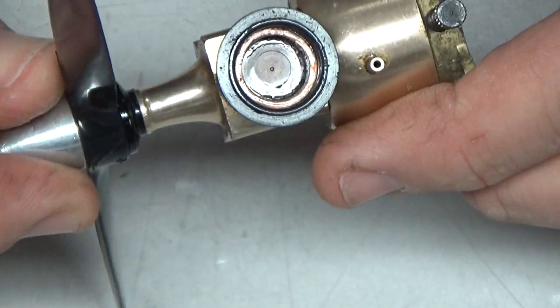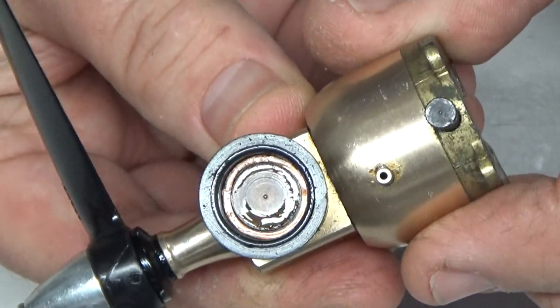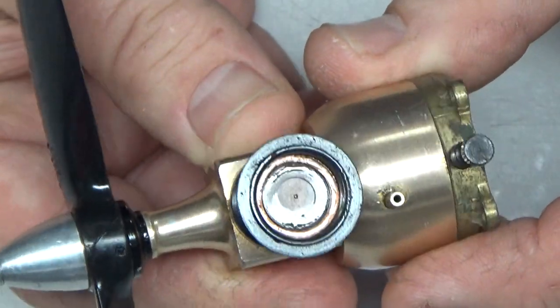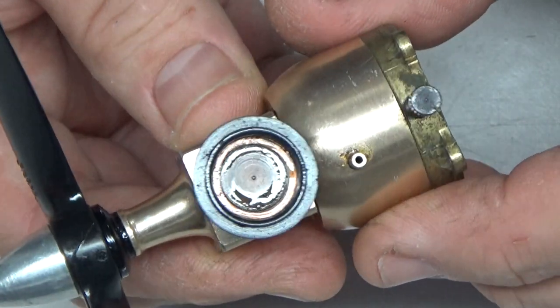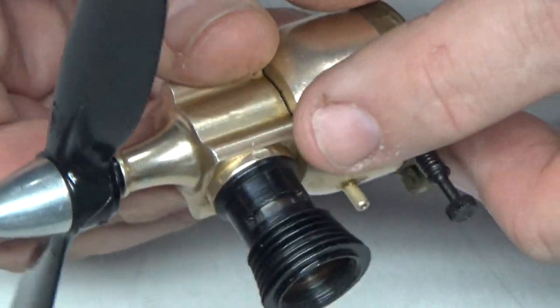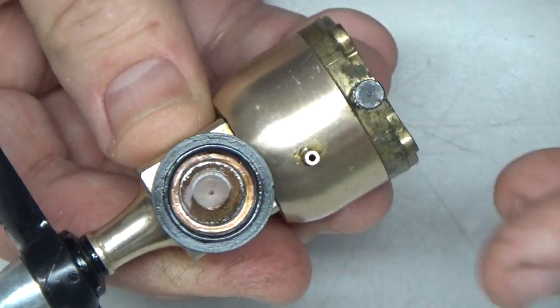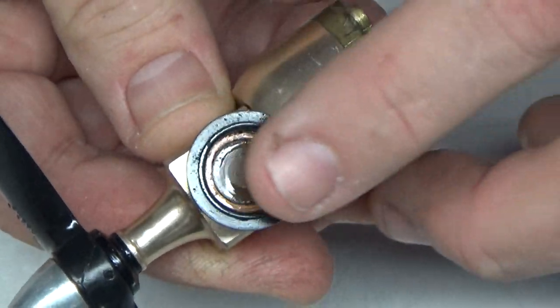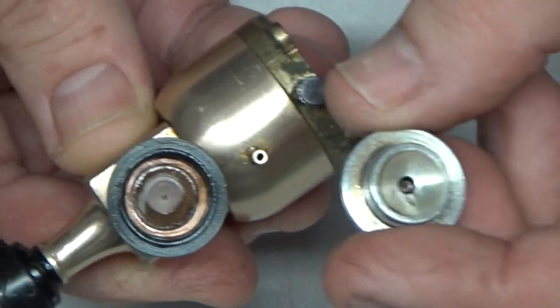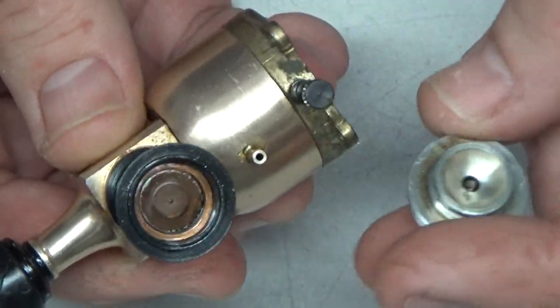Okay, so we're at top dead center there. I don't know, does that look like it's been run? I don't know what the top of a Cox piston should look like. I'm thinking maybe it should be the same color as the side. So it looks like maybe this has been run a time or two. It looks like there might be a little bit of oil residue in there.